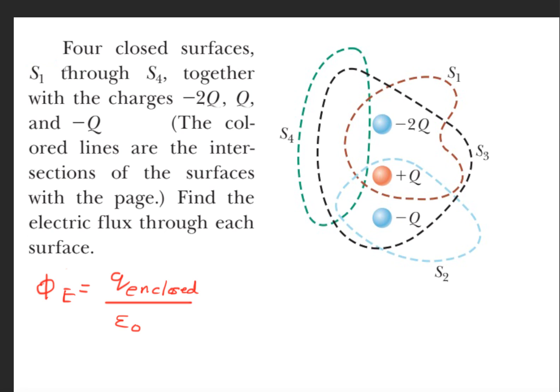So let's take a look at surface number one, and surface number one is this path right here. Inside this surface there are two charges: we have minus 2Q and plus Q. So what's kind of left out in this equation here is this summation symbol, so you want to add up all the charges inside that surface.